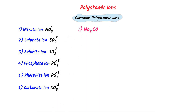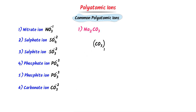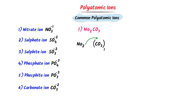Consider sodium carbonate (Na₂CO₃). The polyatomic ion is CO₃, or carbonate ion. According to the criss-cross method, the subscript 2 belongs to carbonate, so carbonate carries −2 charge, and the subscript 1 belongs to sodium, so sodium carries +1 charge. Na stands for sodium and the polyatomic ion is carbonate — giving sodium carbonate.